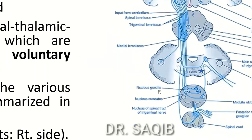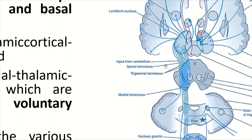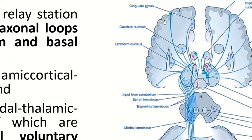The tract coming from nucleus gracilis and nucleus cuneatus is the medial lemniscus. Also shown are the trigeminal lemniscus, spinal lemniscus, and input from the cerebellum — all going toward the thalamus as afferents. Input also comes from the cerebral cortex to the thalamus, passing through the basal nuclei, with input from the caudate nucleus. The hypothalamus also sends afferents to the thalamus.